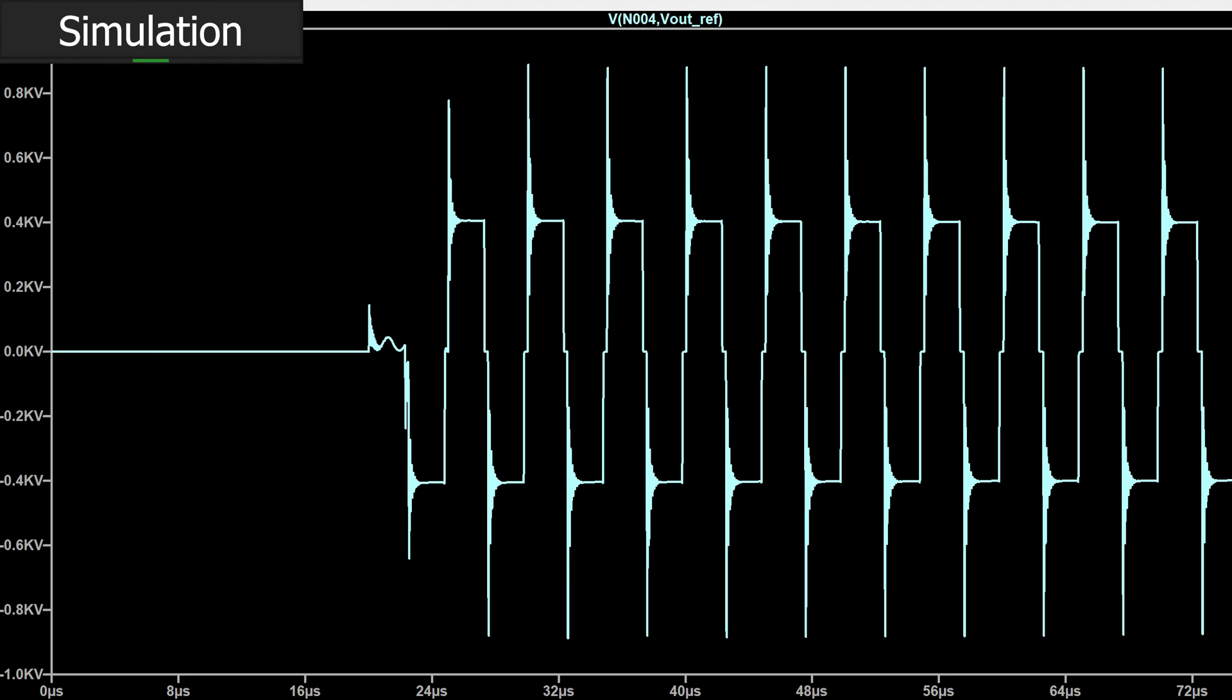But still! Nominal output voltage of 400 volts, but ringing up to 800. Thankfully, 1200 volt silicon carbide diodes aren't too hard to find, nor are they excessively expensive.